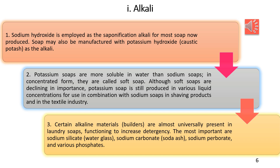In shaving products and textile industries, sodium soap and potassium soap are used together. Certain alkaline material builders are almost universally present in laundry soaps, functioning to increase detergency. The most important are sodium silicate (water glass), sodium carbonate (soda ash), sodium perborate, and various phosphates.